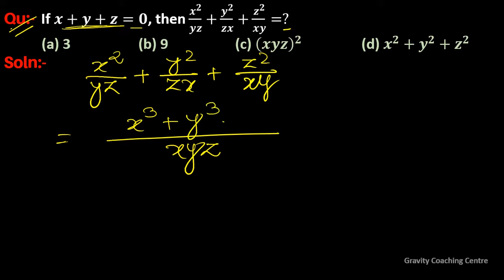Similarly, the second term becomes y cube and the third becomes z cube. Now we'll use this property: the condition is that if x plus y plus z equals 0, then